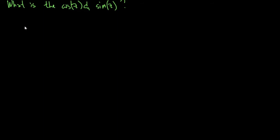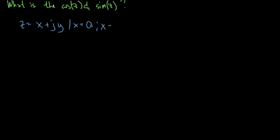As you noticed in our previous discussion, we have considered only Z where our X part, our real part, is equal to zero. So Z = 0 + jY where X is equal to zero. Now, what if our X is not equal to zero? So there is a value of X that we are going to consider.